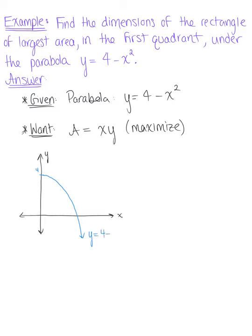This is y equals 4 minus x squared and we of course know that the parabola is continuing on the other side. We only care about quadrant one.